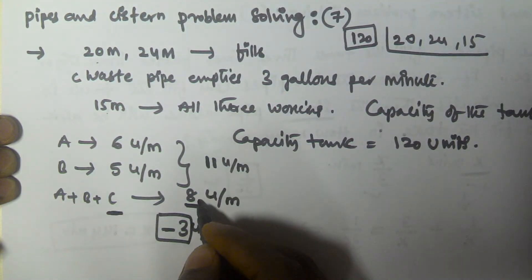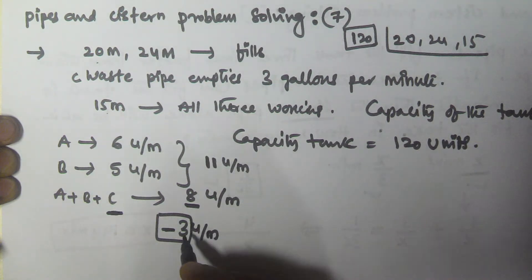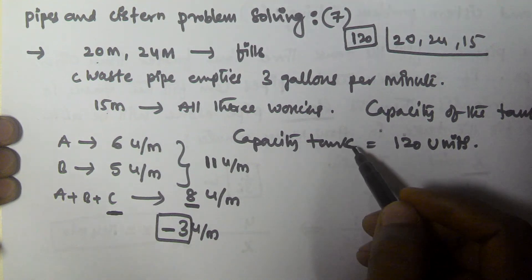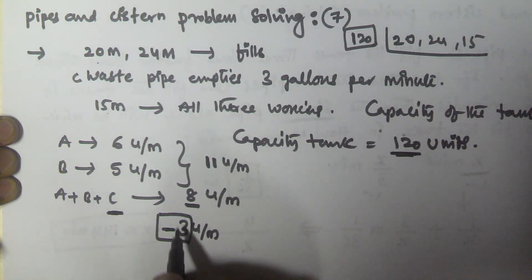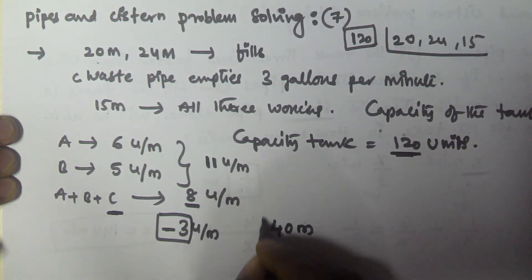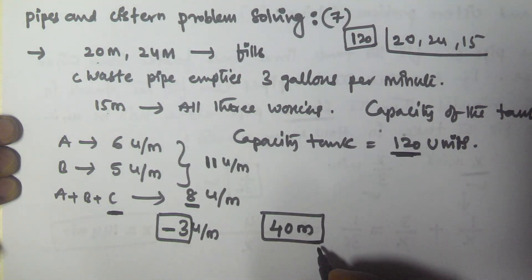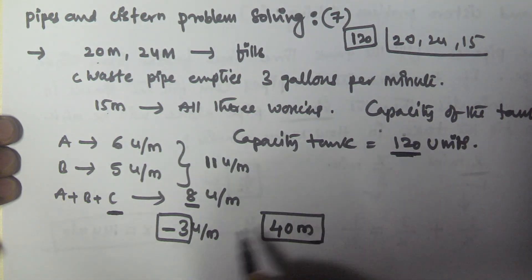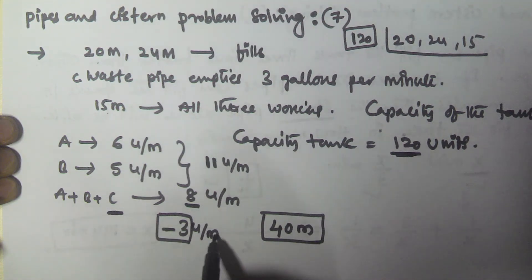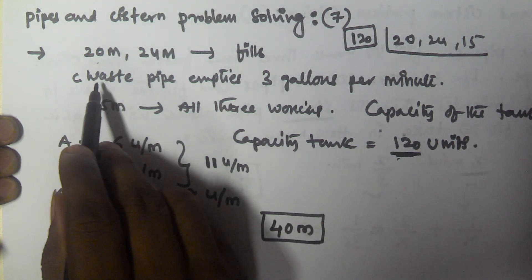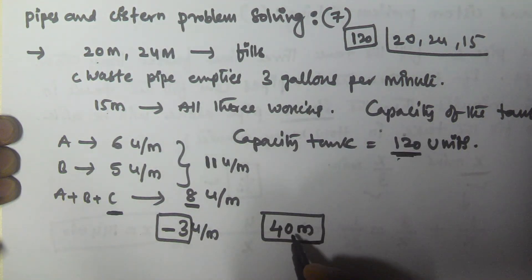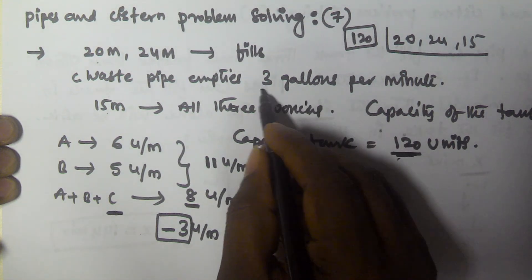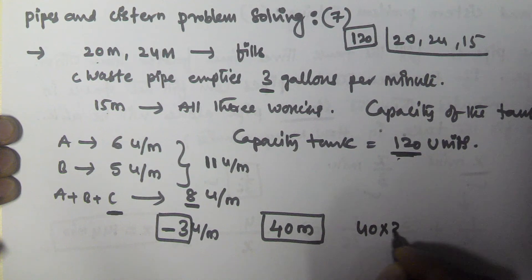Pipes A and B together fill 11 units per minute, but all three together fill only 8 units per minute. The difference is 11 minus 8, which equals 3 units per minute — that is the rate at which pipe C (the waste pipe) is emptying. So C alone empties 3 units per minute, and to empty 120 units it takes 40 minutes.